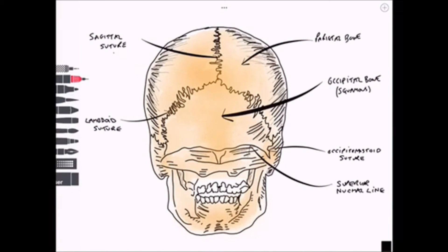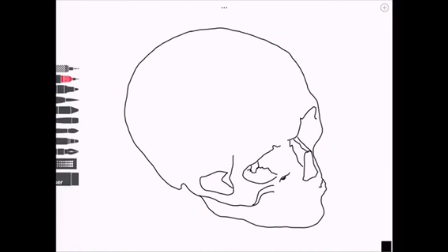We've got the superior nuchal line important for the attachment of muscles like occipitalis, trapezius, and splenius capitis. Inferior nuchal line for attachment of the rectus capitis group of muscles. Also on the midline we've got the external occipital protuberance, a midline structure.